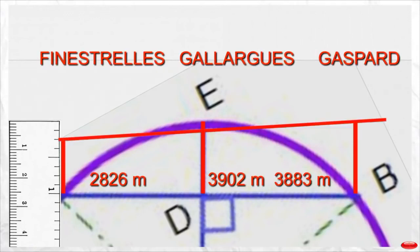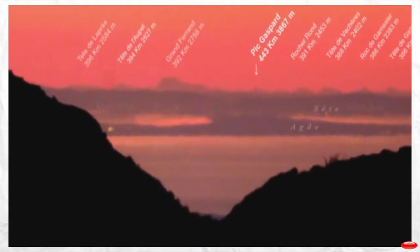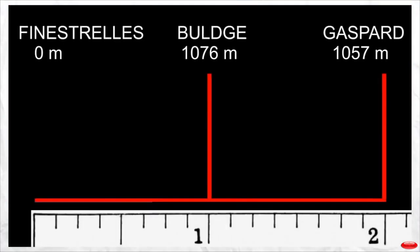As you can see, the expected globe bulge in the middle of the two mountains blocks the line of sight between the two peaks. And yet in the actual picture, you can see much more than just the peak of Mount Gaspard. Let us now determine by how much the line of sight should have been blocked according to the globe earth model.